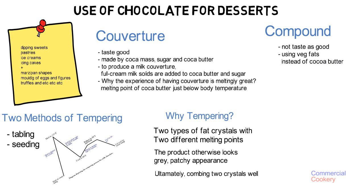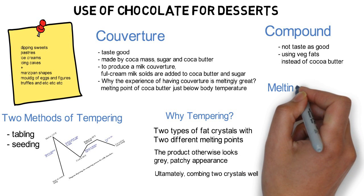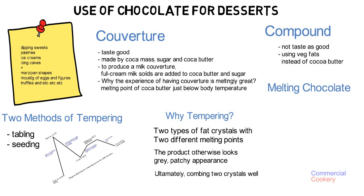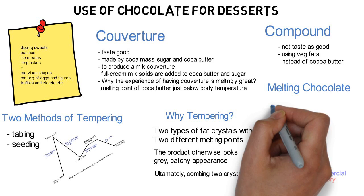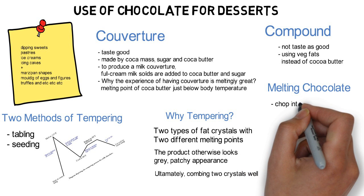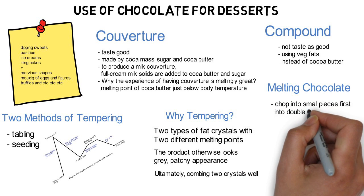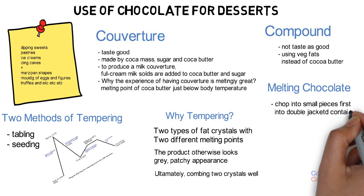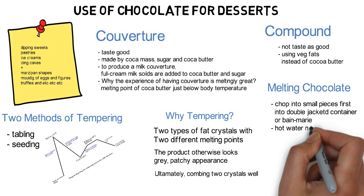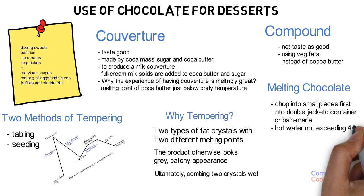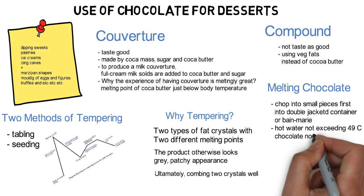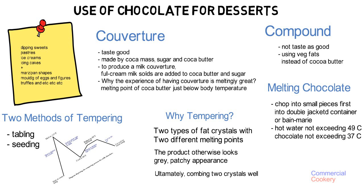The primary difference of compound chocolate is that it uses vegetable fat instead of cocoa butter. When it comes to melting chocolate, we chop the chocolate into small pieces and put it into the container of a Bain-Marie with water not exceeding 49 degrees. Always make sure the chocolate temperature does not exceed 37 degrees.